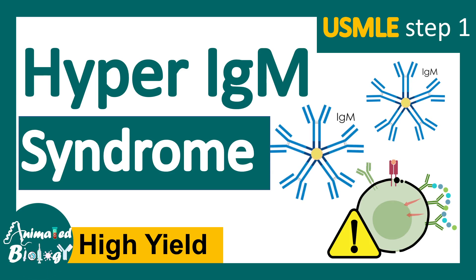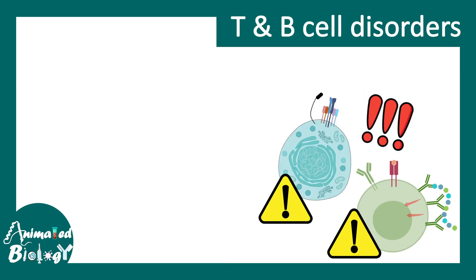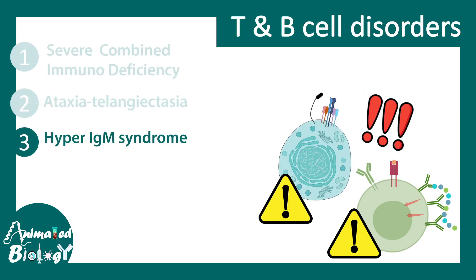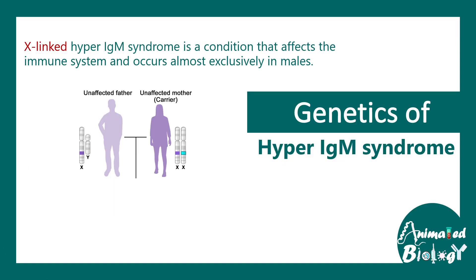In this video we'll talk about Hyper IgM syndrome. This is a high-yield topic for USMLE part 1. Hyper IgM syndrome is one type of T and B cell disorders. In this particular syndrome there is over-representation of IgM in a patient's serum.